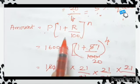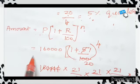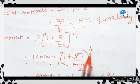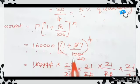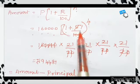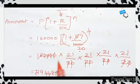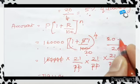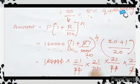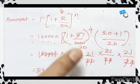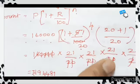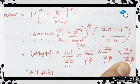Amount equals P into 1 plus R by 100, the whole power N. So P equals Rs. 160,000, into 1 plus 5 by 100, the whole power 4. This simplifies to 1 plus 1 by 20. Taking LCM of 20, we get 20 plus 1, which equals 21 by 20. So it is 21 by 20 raised to the power 4, that is 21 by 20 into 21 by 20 into 21 by 20 into 21 by 20.